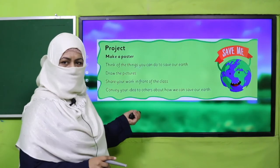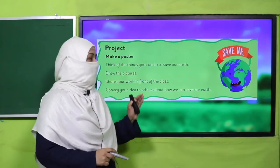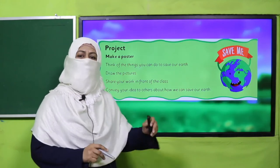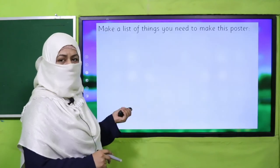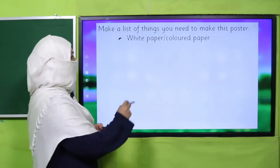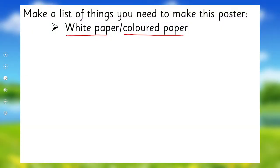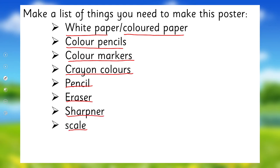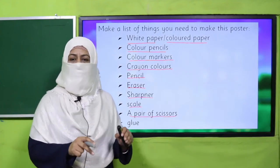All of you will make your poster according to the instructions. Whenever we are going to do something practically, before starting we should arrange all the stuff we need. To make this poster, what do we need? Let's make a list first, then we will start. You may need white paper or colored paper, color pencils, color markers, crayon colors, a pencil to sketch or draw, an eraser, a sharpener, a scale, a pair of scissors if you want to cut and paste something, and glue.